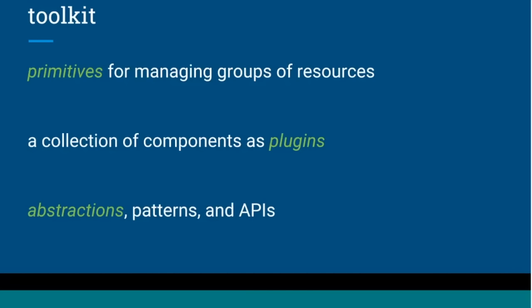InfraKit is a toolkit, and here's how we're thinking about it and why we call it that. First and foremost, it provides primitives for managing groups of resources — things like 'create' and 'delete' — which are low-level primitives for managing different resource types. In addition, InfraKit works with a collection of components that operate as plugins. InfraKit itself doesn't have a whole lot of behavior definition; almost all of it is through plugins.